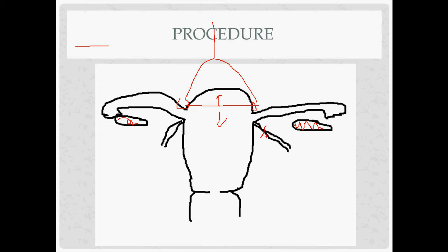After cutting the round ligament, the approach depends on whether the ovaries are being removed. If taking the ovaries, extend the peritoneal incision laterally to the infundibulopelvic (IP) ligament and cut and ligate it. If leaving the ovaries, make a small hole in the peritoneum, identify the utero-ovarian ligament and fallopian tubes, and divide those instead.